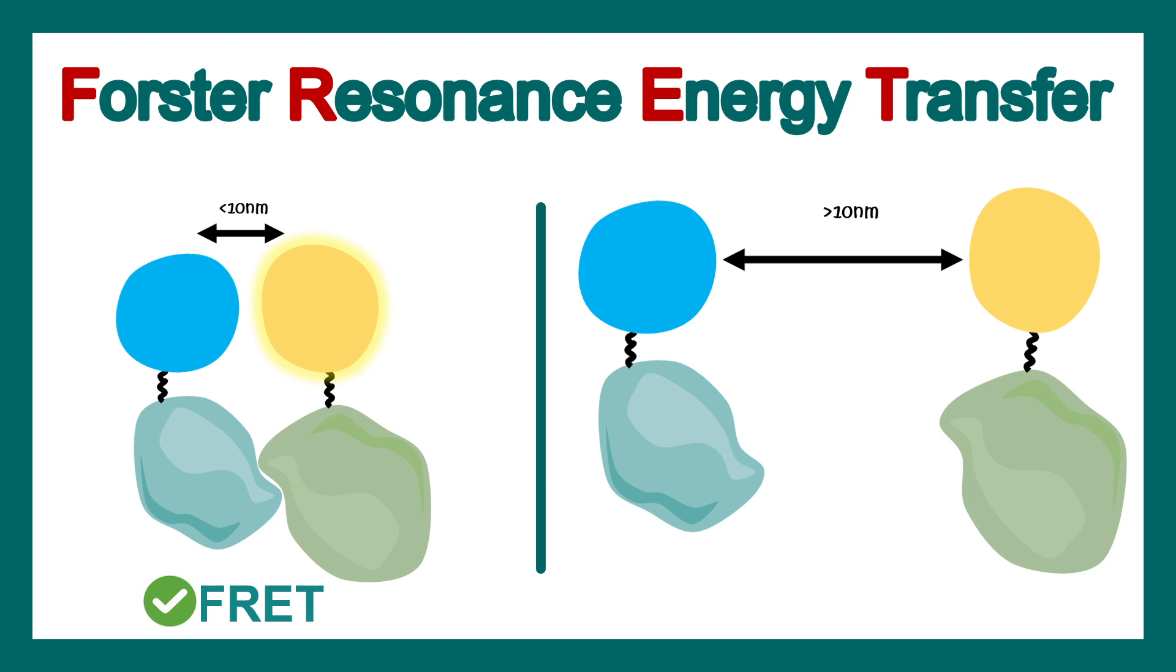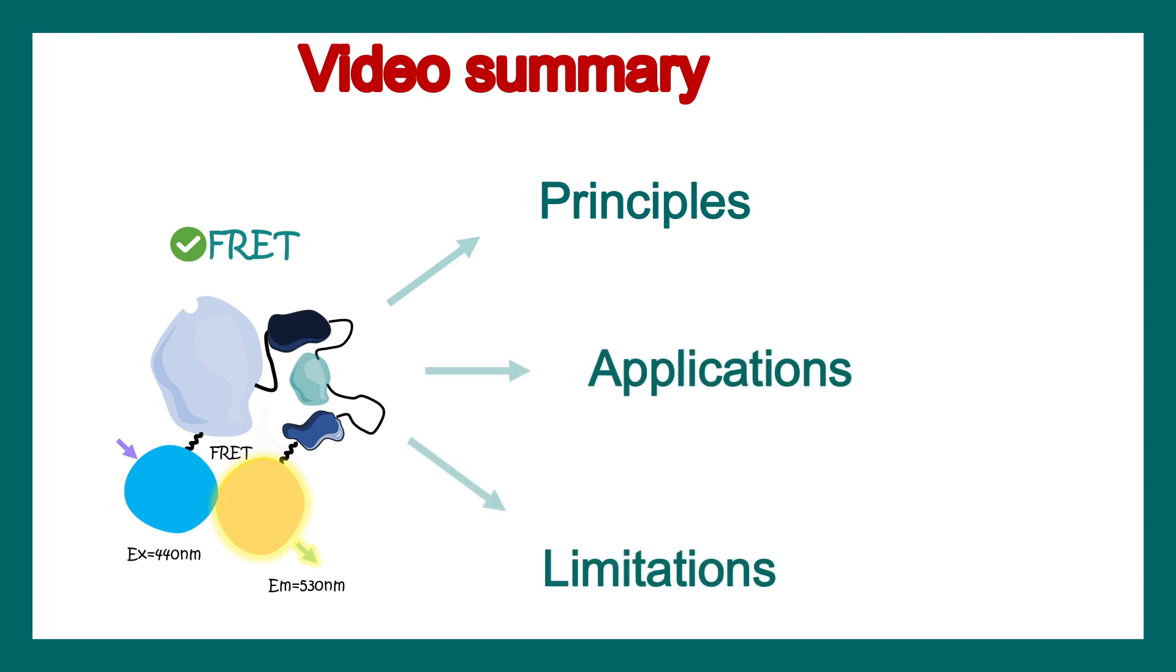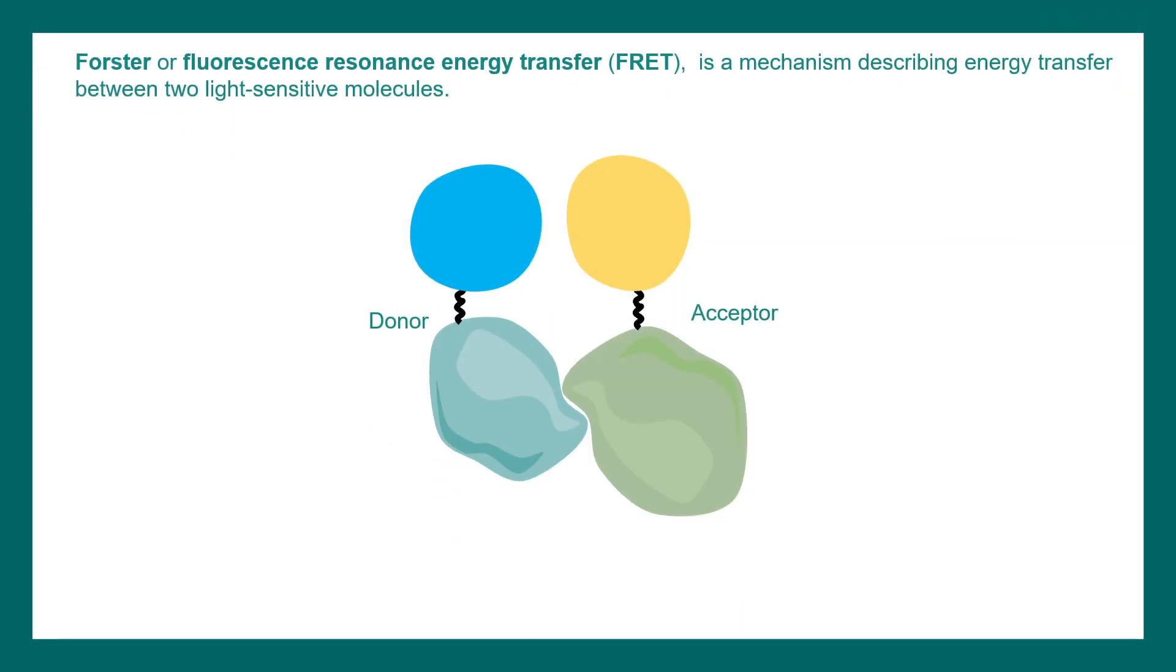Let's begin our discussion on Forster's Resonance Energy Transfer or FRET. We'll talk about the principles, applications, and limitations. Forster's Resonance Energy Transfer is a mechanism which describes energy transfer between two light-sensitive molecules. You need to have a donor molecule, shown in blue, and an acceptor fluorophore, shown in yellow. So when we illuminate the donor, it should transfer the energy to the acceptor. And as a result of that, acceptor fluoresces. This phenomenon is known as FRET.